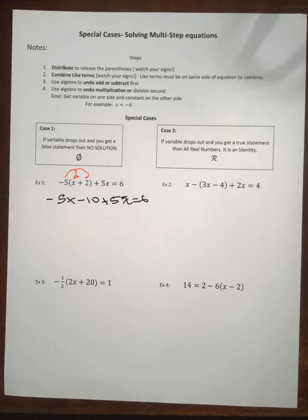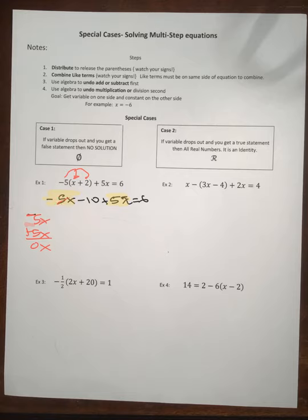Then we're supposed to combine like terms. I see here that we have negative 5X and positive 5X. When you add a negative 5X and a positive 5X, doesn't that give you no X's? So the X's drop out, and we end up with just negative 10 equals 6. And that's not a true sentence — negative 10 doesn't equal 6.